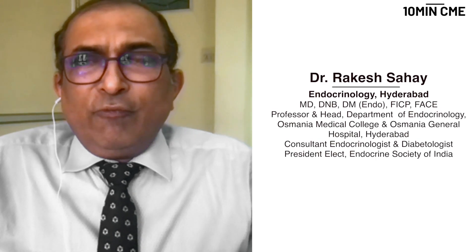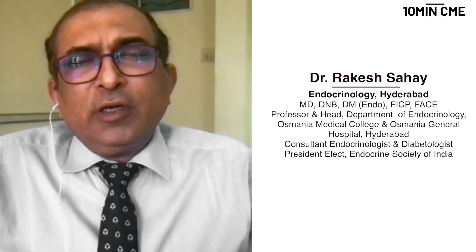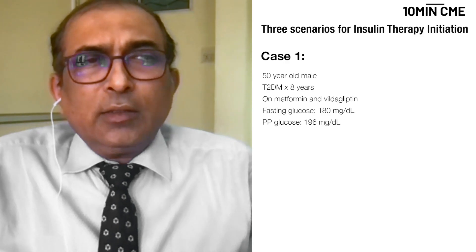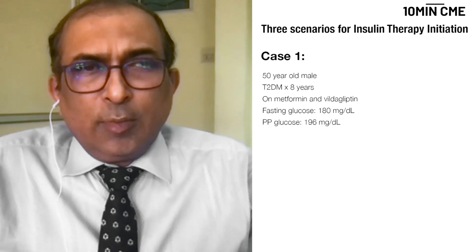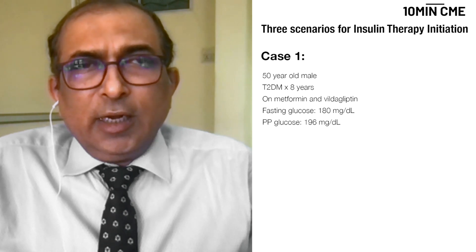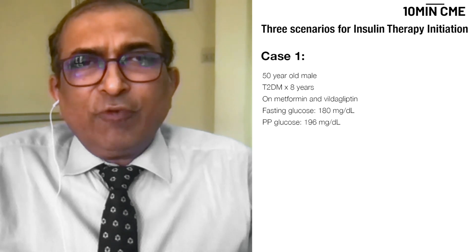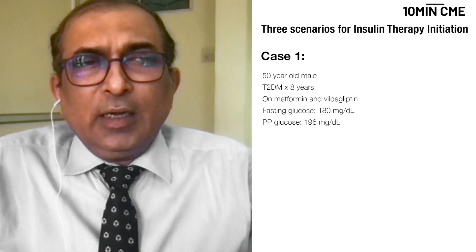To discuss insulin therapy, I have brought three different case scenarios. The first is a 50-year-old gentleman who has had type 2 diabetes for eight years and has been on metformin and bildaglifin, with a fasting plasma glucose of 180 and a post-prandial glucose of 196.